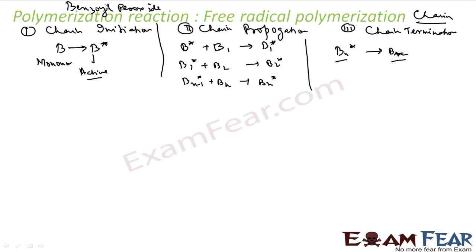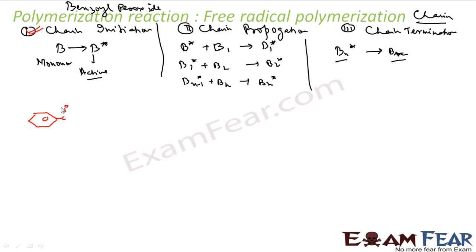Let's see the benzoyl peroxide reaction. I am doing the chain initiation step now using benzoyl peroxide. We have seen benzoyl peroxide in organic chemistry. The O-O bond actually breaks — both of these oxygen atoms get the lone pair of electrons.